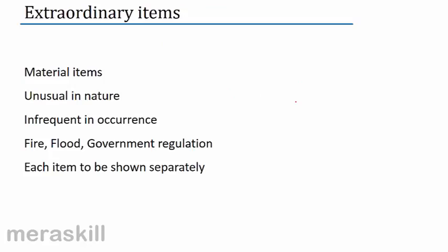Another item is extraordinary items. When any significant unit of a business is being closed down, we disclose separately the income earned while it was in operation and any income or loss on its disposal. Another new item is extraordinary — out of the ordinary items. What do they say? Material items.